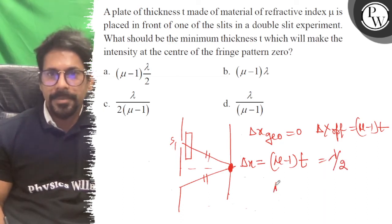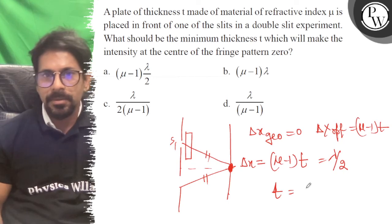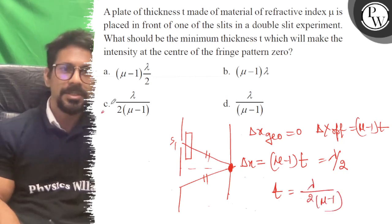So (μ - 1) into t is equal to λ upon 2. Therefore t is equal to λ over 2(μ - 1). So the right answer of the question is C. All the best.